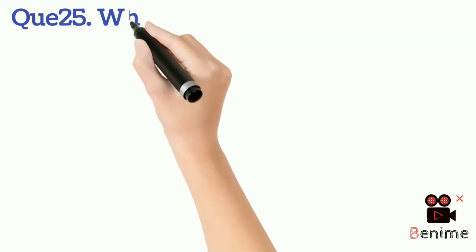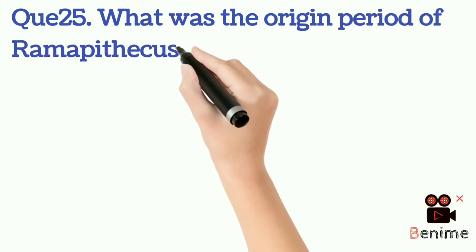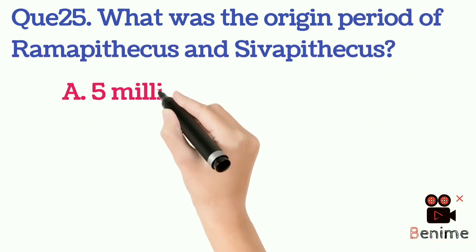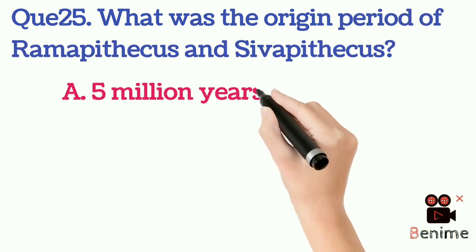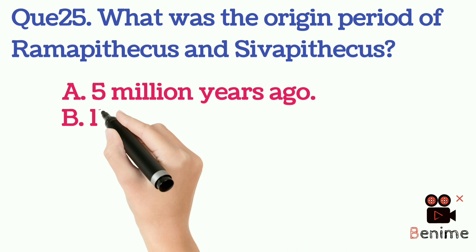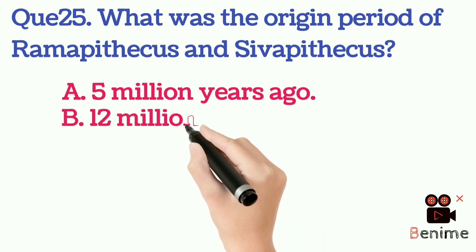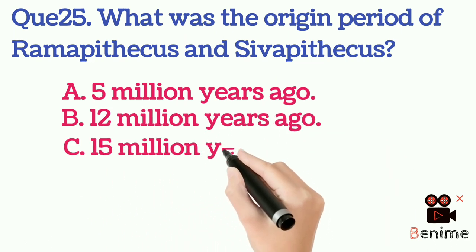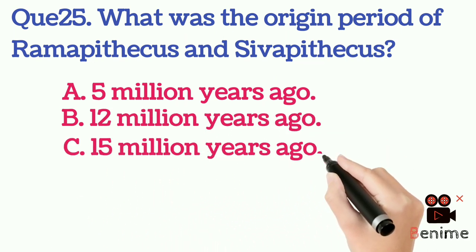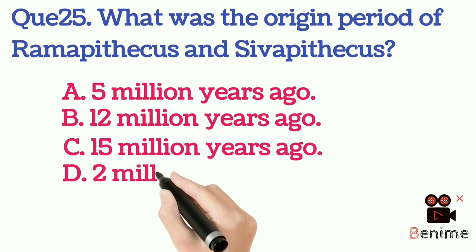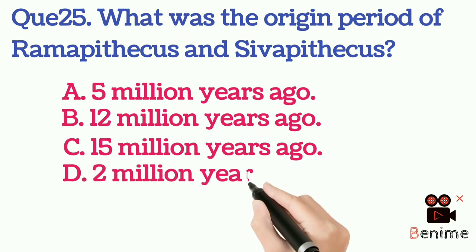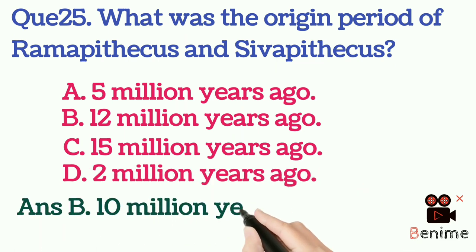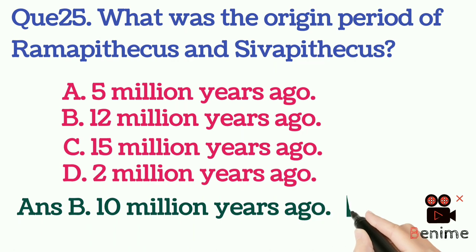Question 25: What was the origin period of Ramapithecus and Sivapithecus? A. 5,000,000 years ago. B. 12,000,000 years ago. C. 15,000,000 years ago. D. 2,000,000 years ago. Answer B: 10,000,000 years ago.